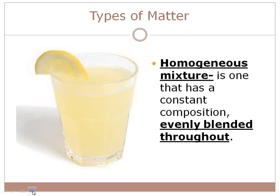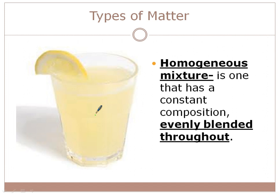A homogeneous mixture is evenly blended throughout. Looking at lemonade, for example, I cannot see the individual parts of the mixture — it's evenly blended, so it is homogeneous. Other examples include salt and water (when mixed you can't see the salt), Kool-Aid, and coffee — they all look like just one liquid, evenly blended.